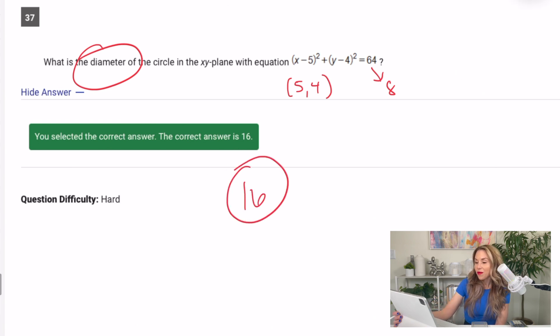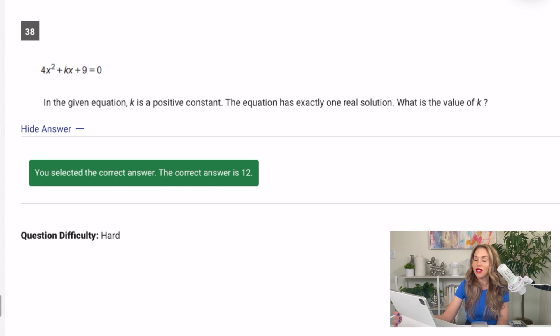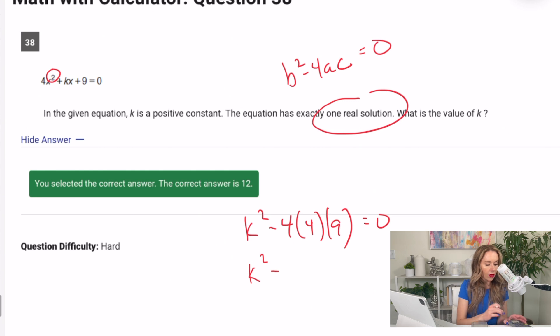38. This was my favorite. In the given equation, k is a positive constant. The equation has exactly one real solution. What is the value of k? Well, I've gone over this in my predictions videos, so hopefully you didn't miss those. If they're talking about real solutions, and it's a quadratic because your highest exponent is a 2, that's a sign you're going to use b squared minus 4ac or the discriminant. Now, in this case, if it's one solution, we want the discriminant to equal zero. So I'm going to fill in what I know. So my b is k. So I've got k squared minus 4 times 4 times 9, and that's going to equal zero. So I have k squared minus, well, 4 times 9 is 36, and then times 4 is 144. I need k to be 12 because then I'll get zero. So the answer was 12.